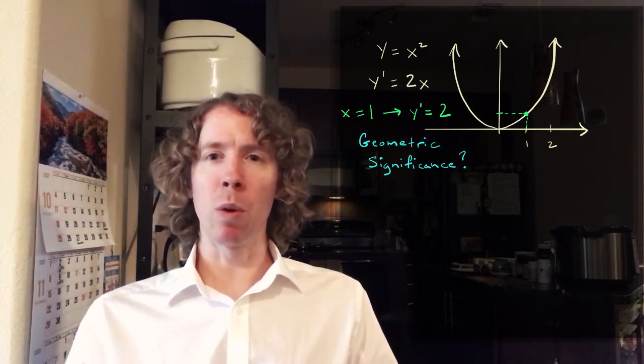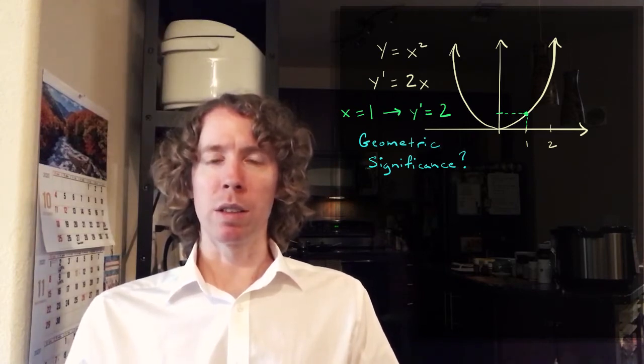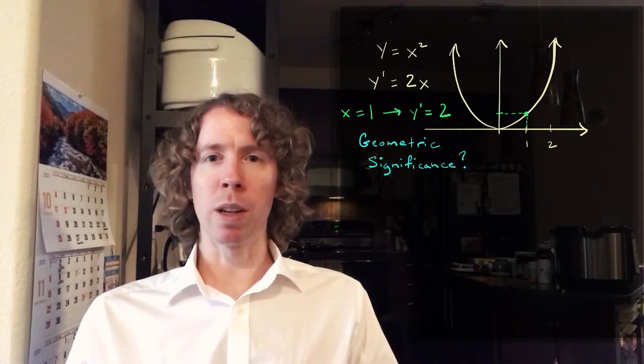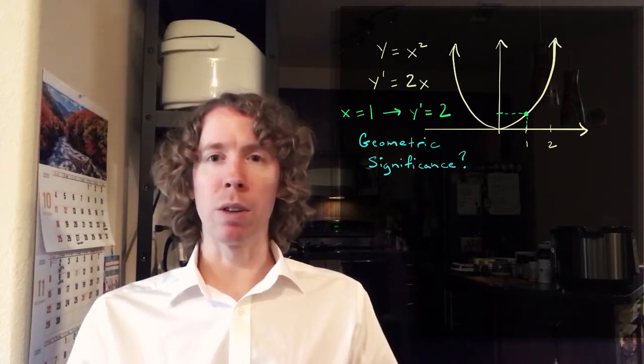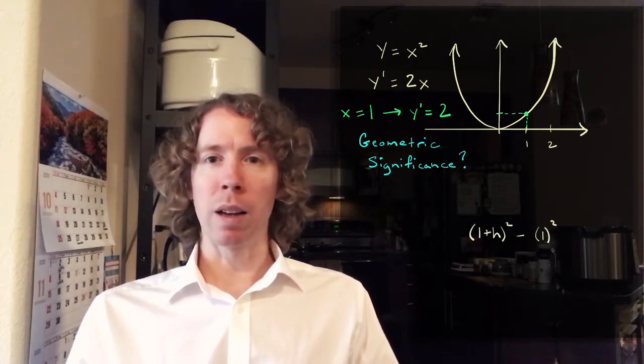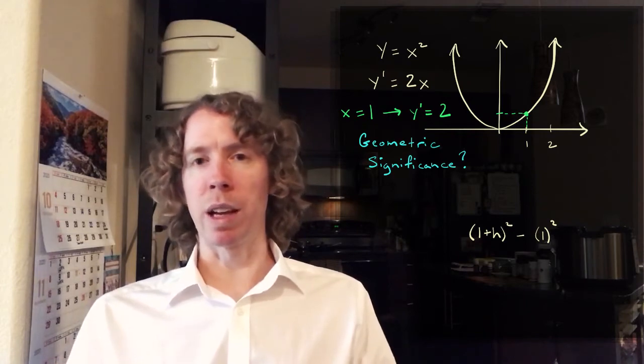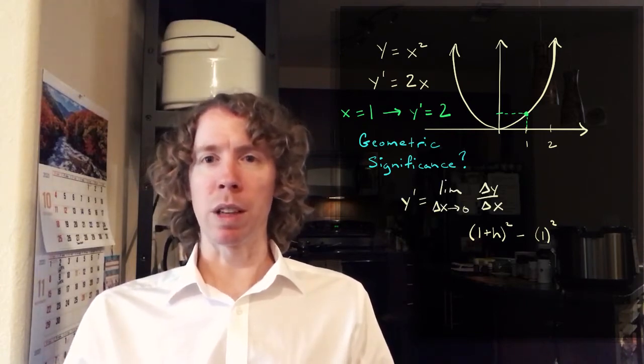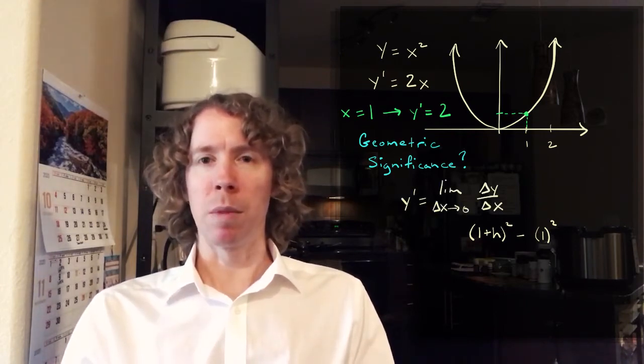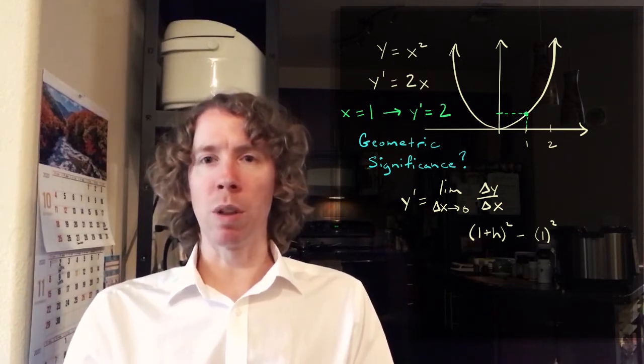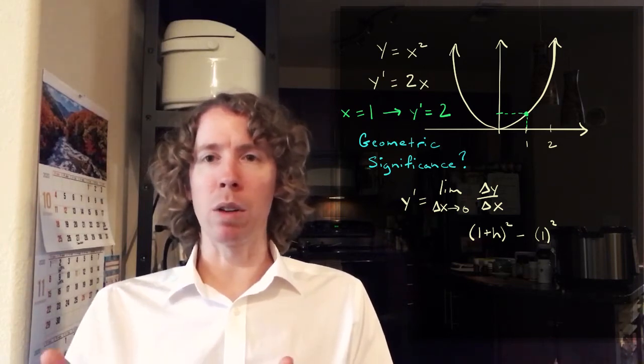If we look at X equals one, then remember what we need to do is to get the derivative at X equals one, we need to take the difference in the Y values divided by basically the difference in the X values or the difference in the increment of the X value.